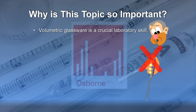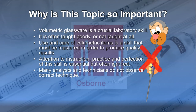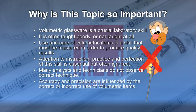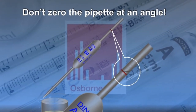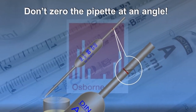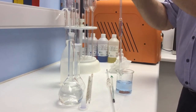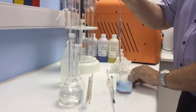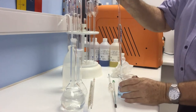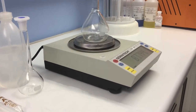I have observed volumetric glassware being used incorrectly and in an unacceptable condition in many laboratories I have visited. Incorrect use can seriously affect the correctness of analytical results. In this course we deal with the description, correct use and care of each volumetric item, and demonstrate how to verify or calibrate it.